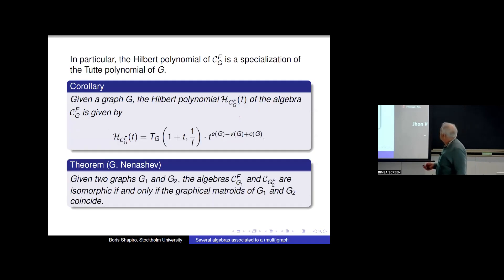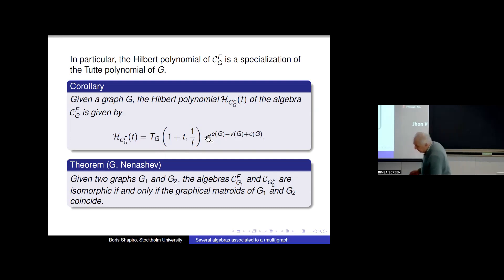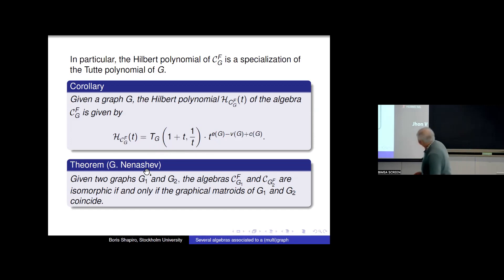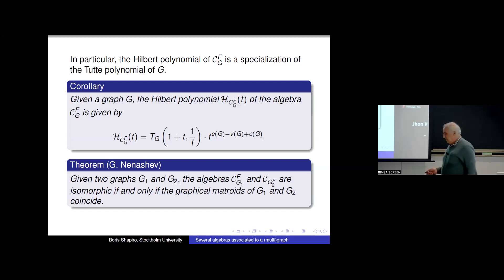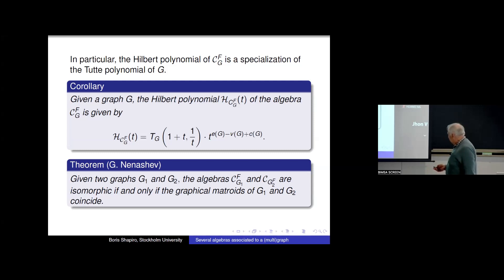The Tutte polynomial can be defined through generating functions for external and internal activities. My former student Gleb Nenashev — now a collaborator of Anatole — proved that two graphs have isomorphic graded algebras if and only if their graphical matroids coincide. There exist graphs with isomorphic graphical matroids that are not isomorphic as graphs, but this is already very strong information about the graph.